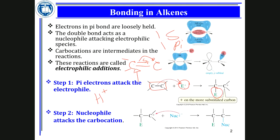The electrophile forms a bond with one of the two carbons — it doesn't matter which if the alkene is symmetrical. The other carbon loses the pi bond, meaning it loses electrons, and losing electrons gives that carbon a positive charge. So you get a carbocation intermediate.